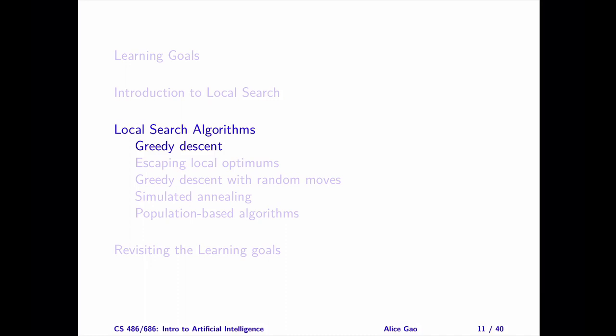This algorithm has many other names: Hill Climbing, Greedy Ascent, and Iterative Best Improvement. I will refer to this algorithm as Greedy Descent since our goal is to minimize a cost function.